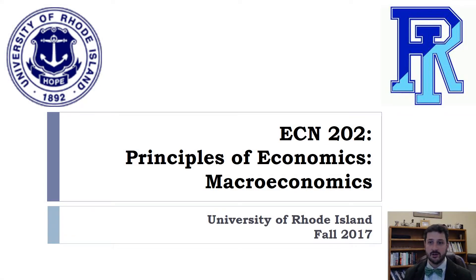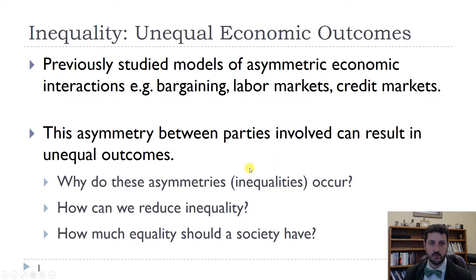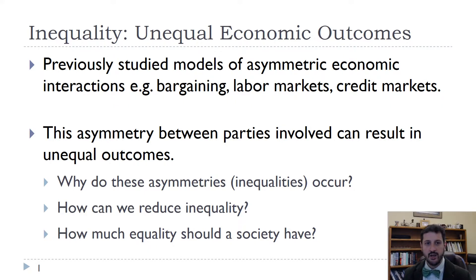Chapter 19 is about economic inequality. We're going to look at inequality both within countries like the United States and around the world, and look at a number of different measures of inequality and also what we can do about it. We've already looked at models that lead to asymmetric or unequal economic outcomes — different levels of bargaining power in labor markets between employees and employers, and in credit markets between borrowers and lenders. We want to think about why these inequalities occur, what we can do to reduce inequality, and when we want to accept the market outcome.